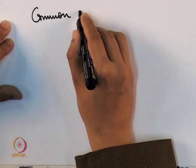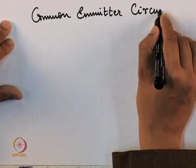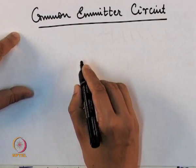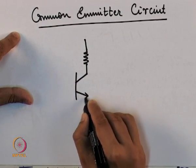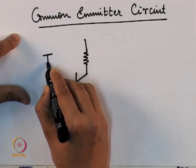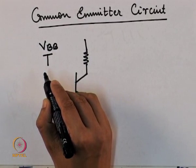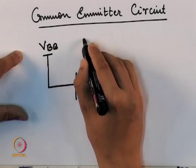Now that we have these basic relationships we can proceed to the actual circuits. The first circuit we shall consider is what we call a common emitter circuit. We will be discussing this circuit with an NPN transistor.